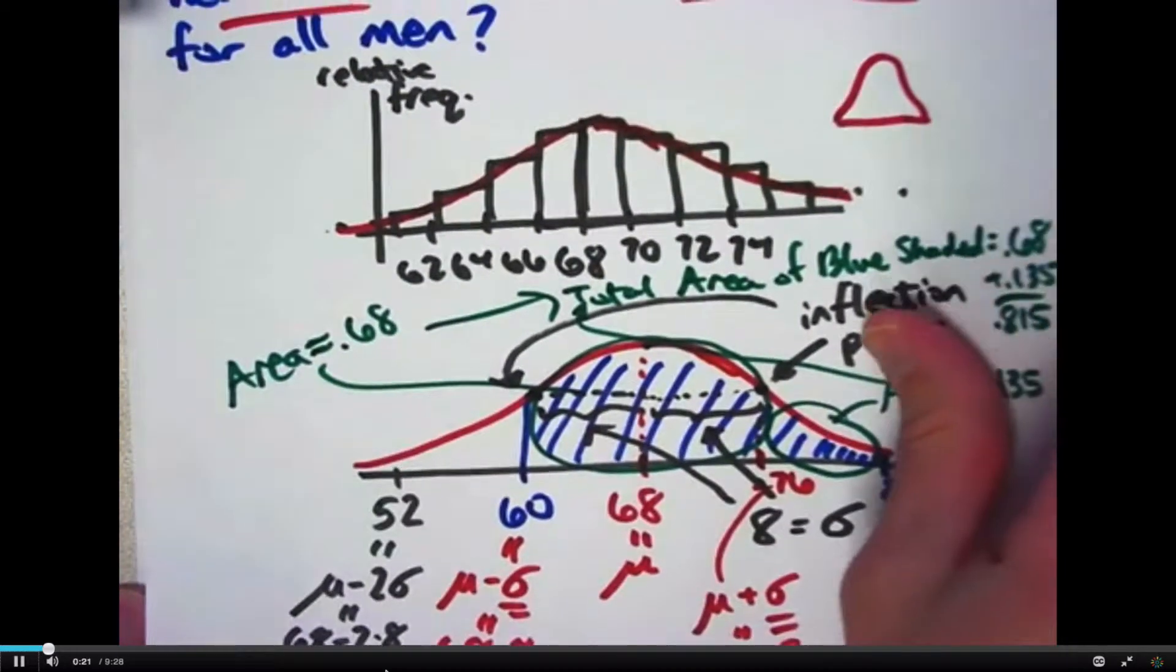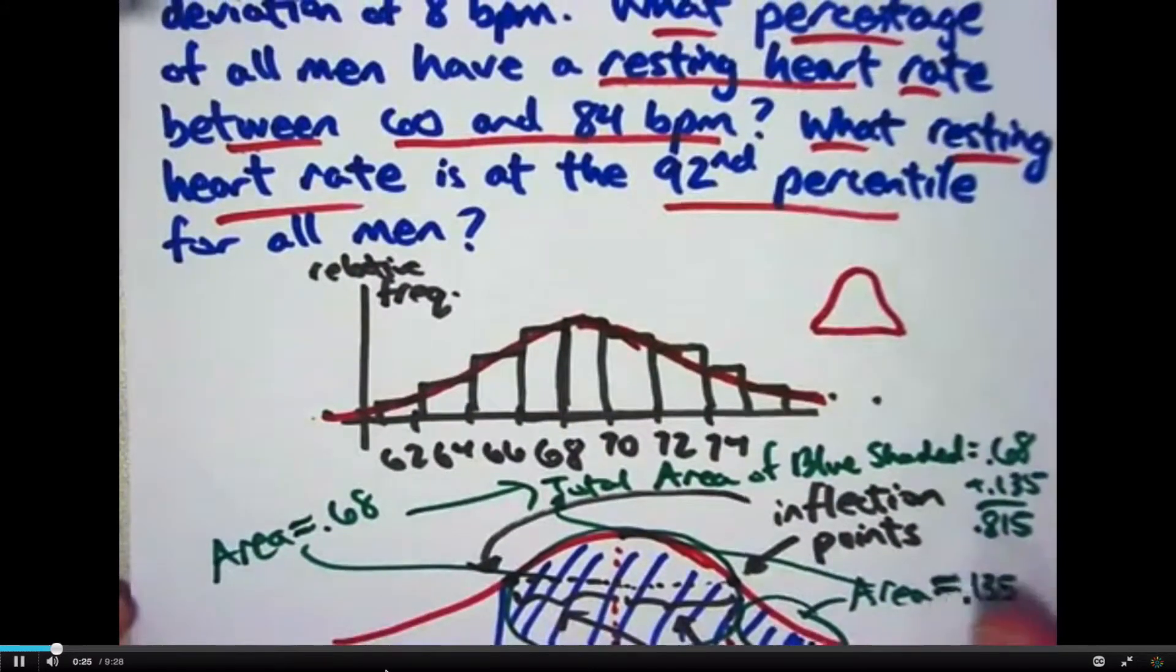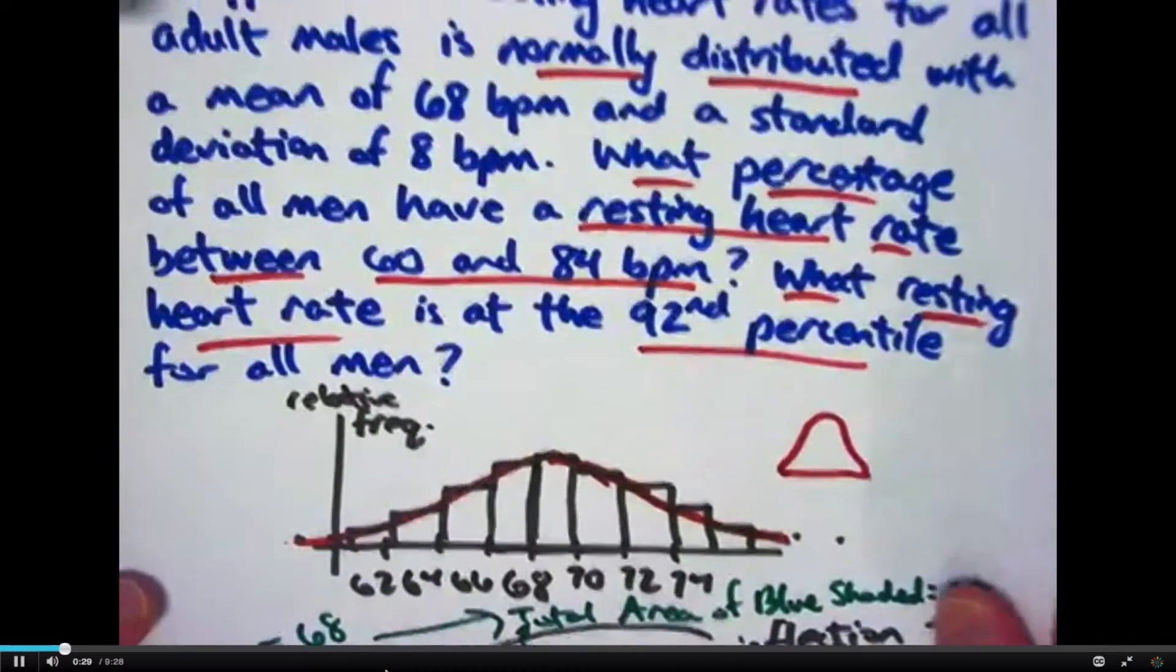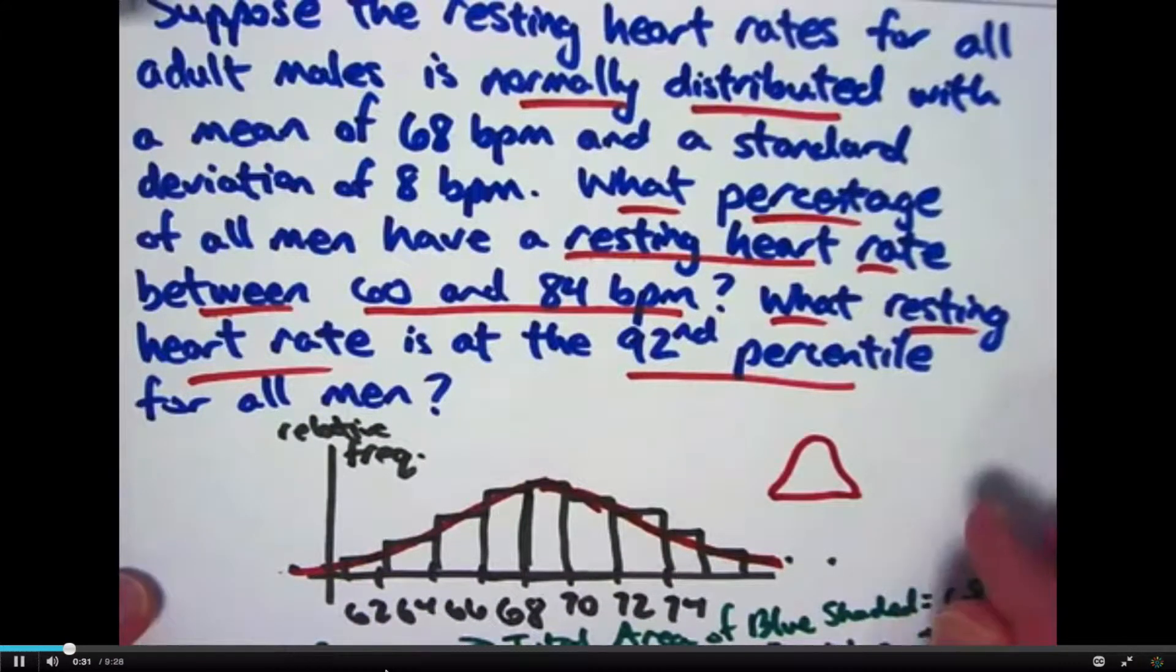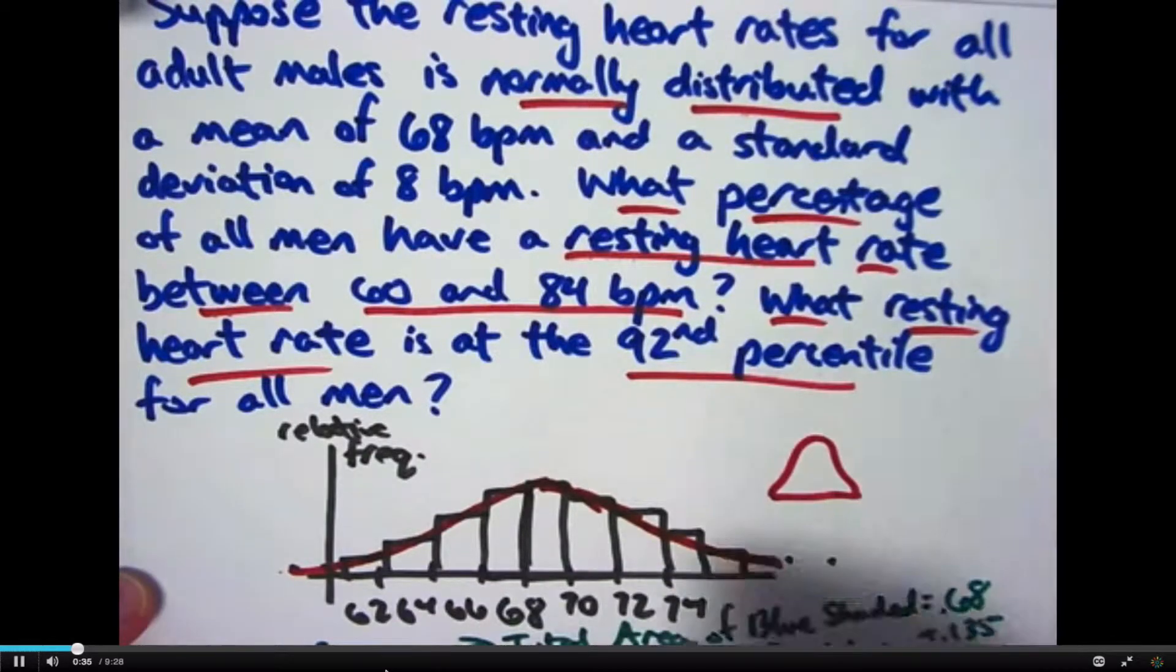Normal curves are often called bell-shaped curves, but not all bell-shaped curves actually are normal. Normal curves really have a particular kind of formula, which we're not getting into here. Normal curves are also called normal distributions, another name, also called Gaussian distributions.